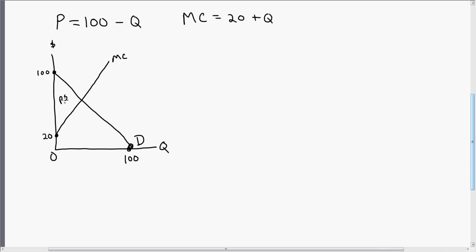So producer surplus is this big triangle right here. As before, we need to get one more dimension of the triangle. We need to find this quantity where price equals marginal cost.